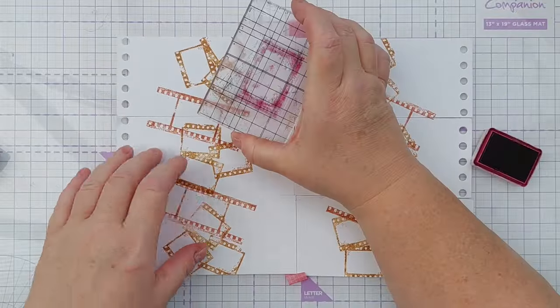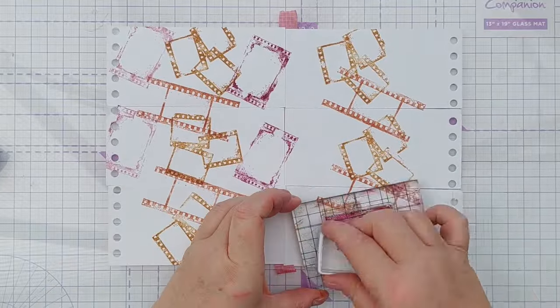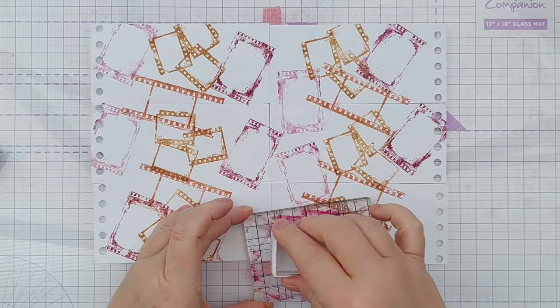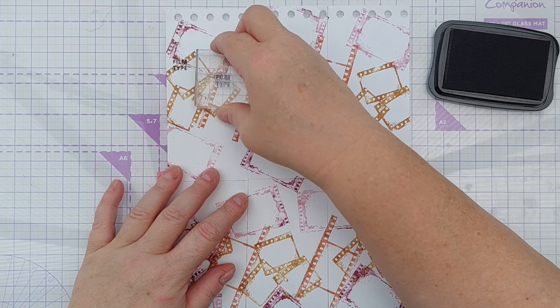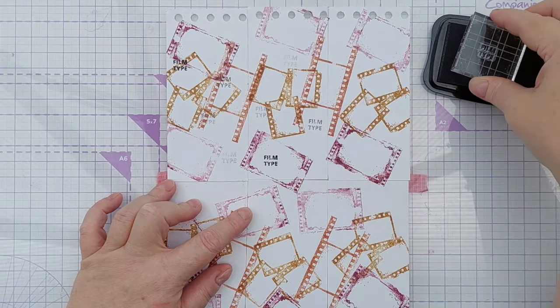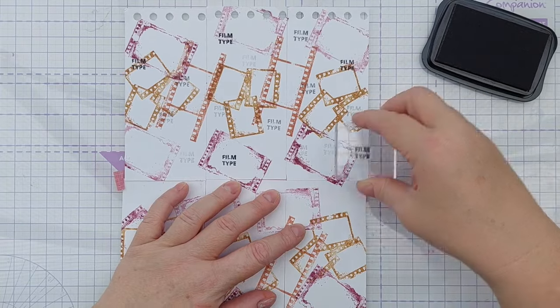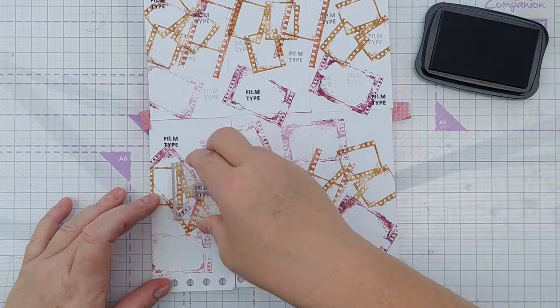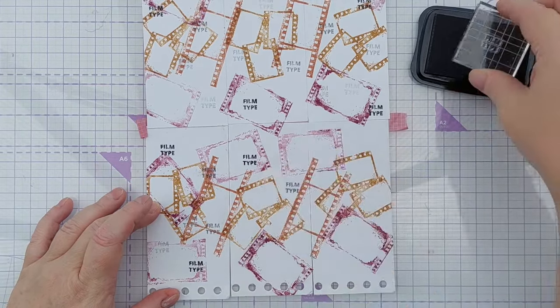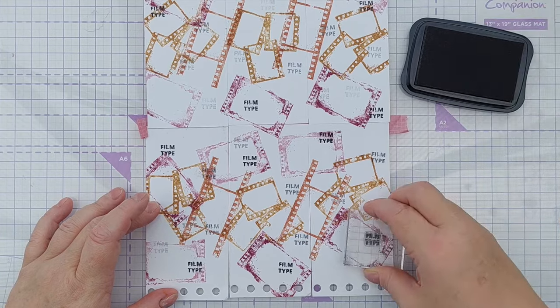After I finished with that third grungy stamp, I used a word stamp from the stamp set. It says Film Type and I stamped this in Stayz On, which is my permanent black ink. I don't have the archival black ink, I've got Stayz On instead. And I used that to do multi-generation stamping all over just to add a bit of text to the background. So multi-generation stamping, if you don't know, is where you ink up your stamp, you stamp it, and then without re-inking it you stamp it again and again and again until there's no ink left on your stamp. So you get lots of different intensities of your stamped image or words.